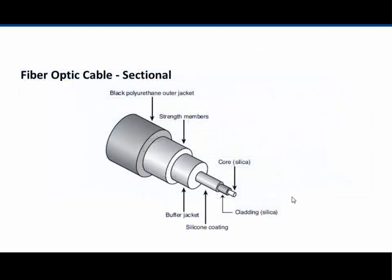Here is a sectional diagram of a fiber optic cable. You can see the black outer jacket, a strength member, a buffer, the silicone coating, the cladding, and the core. The core is the glass or silica that the light runs through. The cladding is also used in measurements of the thickness or diameter of a fiber optic cable. The goal is to keep the light within the cable and not let it escape.